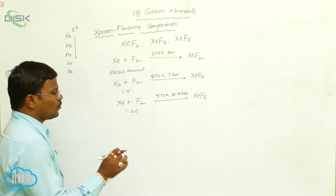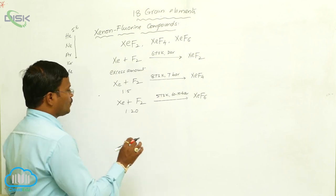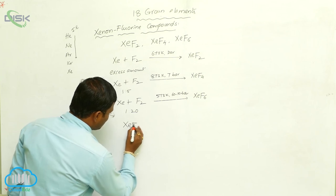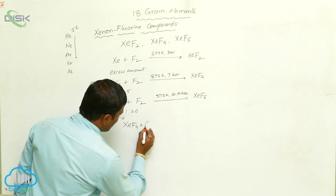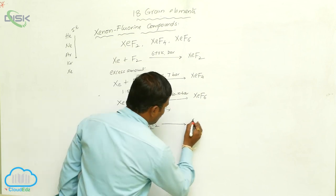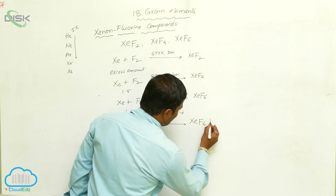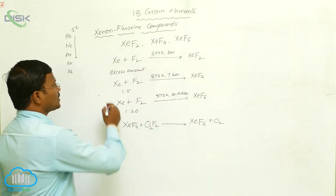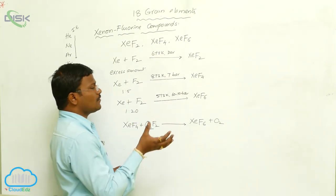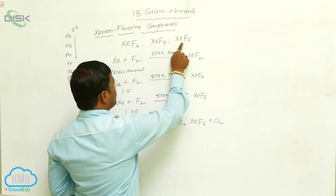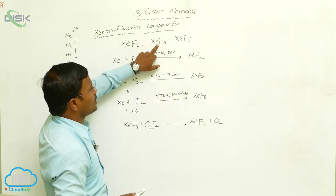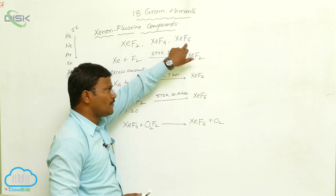Xenon hexafluoride is also produced when xenon tetrafluoride reacts with dioxygen difluoride, producing xenon hexafluoride plus oxygen. These are the chemical methods for producing xenon hexafluoride. So, three types of xenon fluorides are available: xenon difluoride (XeF₂), xenon tetrafluoride (XeF₄), and xenon hexafluoride (XeF₆). Next, we will look at the structures of these xenon fluorides.